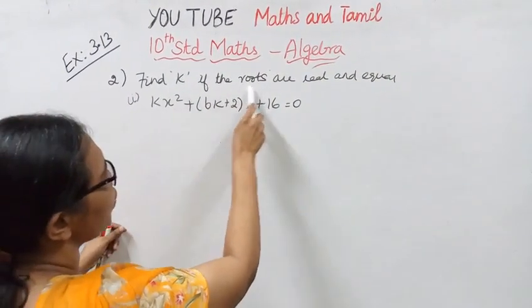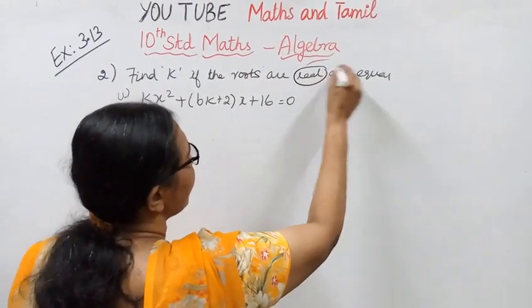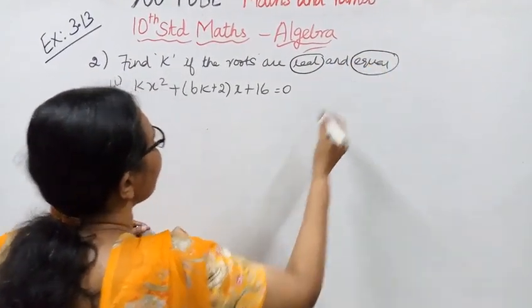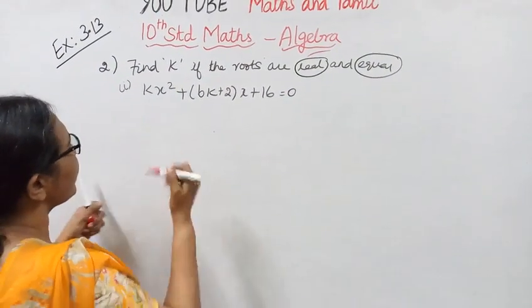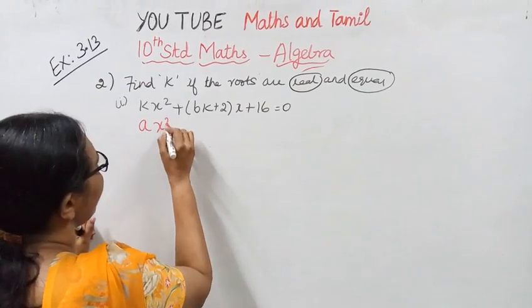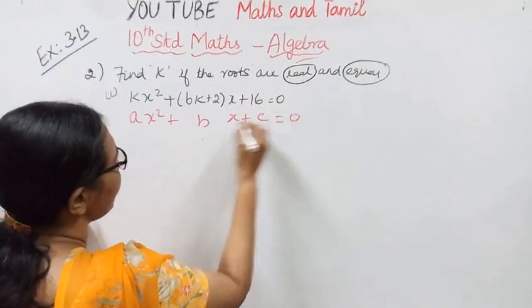Find the value of k if the roots are real and equal. So in this question, we need to write the standard form: a x square plus b x plus c equal to 0.